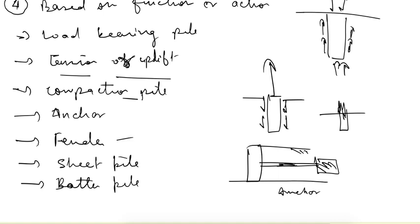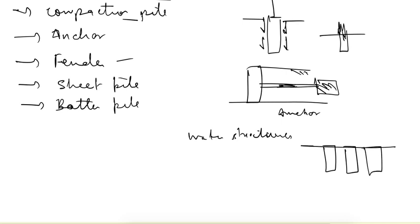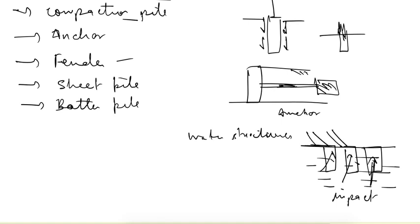Fender pile is used in case of water structures. It is used to support the impact load. It is made just adjacent to the water body, so in front of these piles there will be water. If a ship is coming and hits these piles, these piles take the impact load and save the structure behind them.